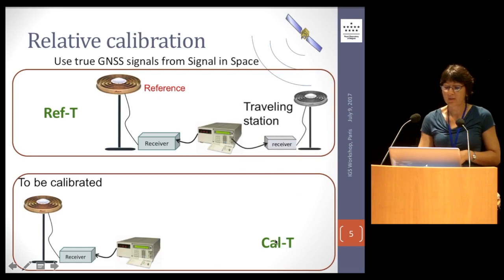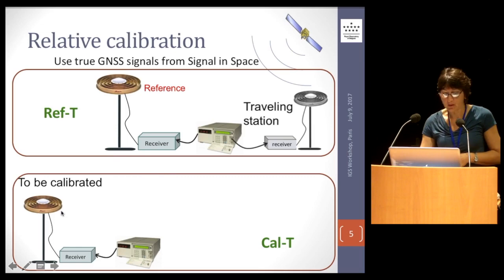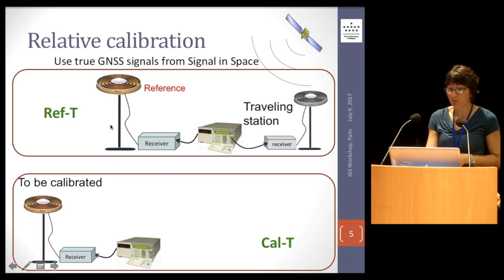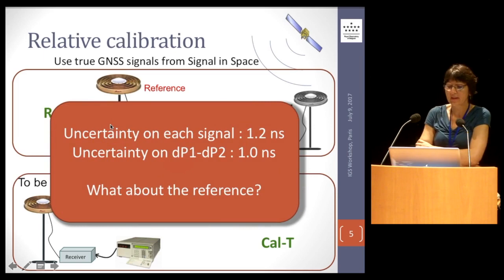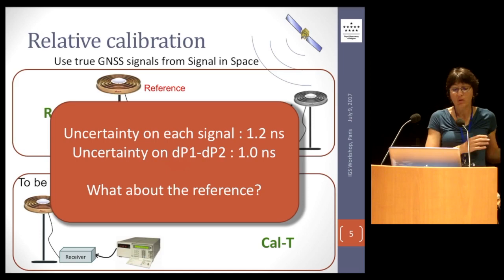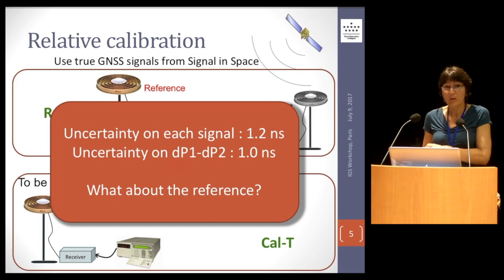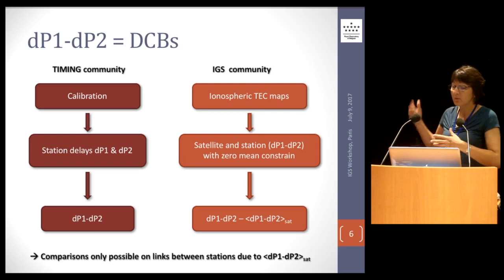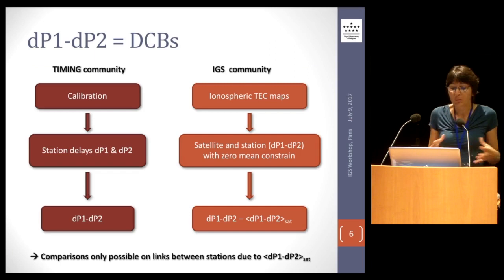From the difference of hardware delay between a station and the traveling, and the reference and the traveling, we get the hardware delay of that station with respect to the reference. The uncertainty on this calibration on each signal is 1.2 nanoseconds. As there are some common contributions to both P1 and P2, we can say that the uncertainty on the difference P1 minus P2 is at the level of one nanosecond. The reference was determined long ago, and we would like to know if the P1 minus P2 reference corresponds to reality or not.